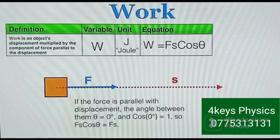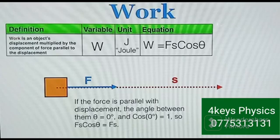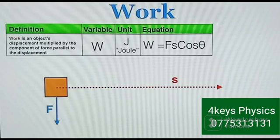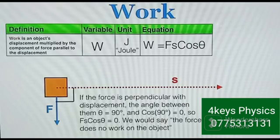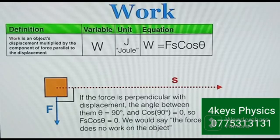If the force is parallel with displacement, the angle between them is zero degrees and cos(0°) equals one. Therefore we simply say force times displacement — if there's no angle you just use F × s to get the work done. It is important to note that if the force is perpendicular to displacement, the angle between them is 90°, and cos(90°) is zero. Therefore F·cosθ becomes zero — the force does no work on the object.